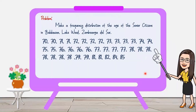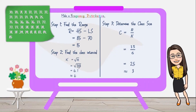Now let's do some activity. Make a frequency distribution of the age of the senior citizens in Bolulawan, Lakewood, Zamboanga del Sur. Here are the data. Step 1: Solve for the range. Range equals highest score minus lowest score. Examining the data, the highest score is 85 and the lowest score is 70. Subtracting gives us 15 as the value of the range.